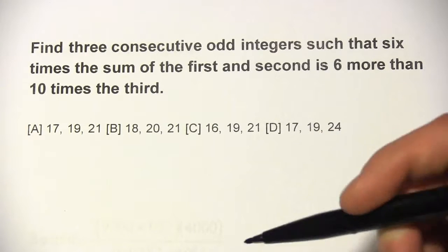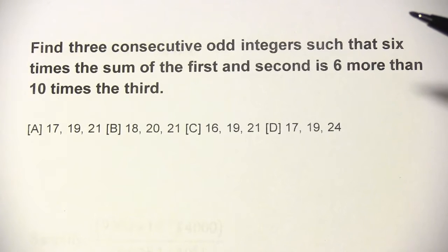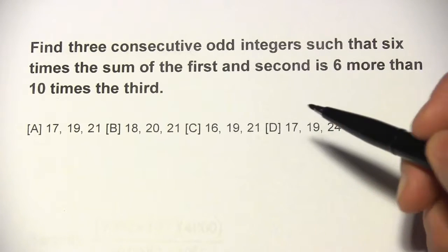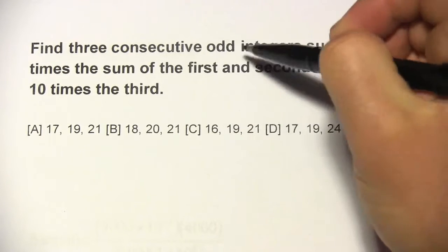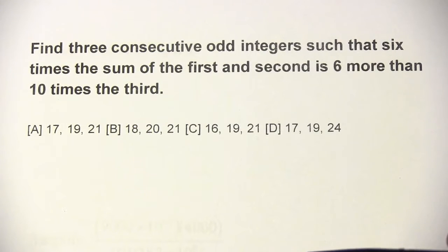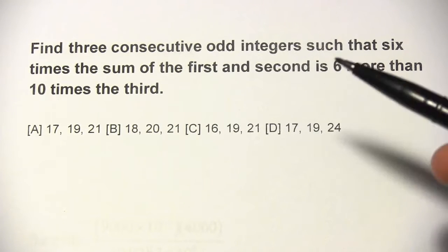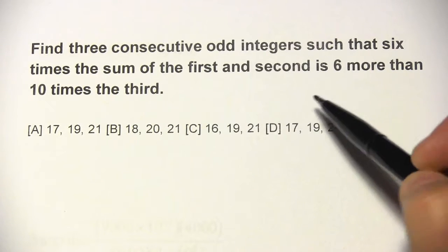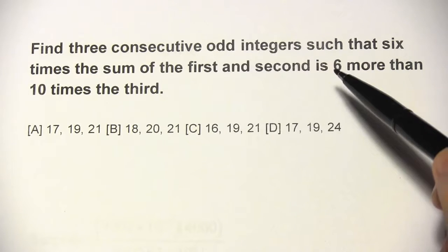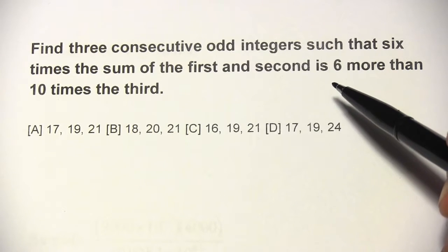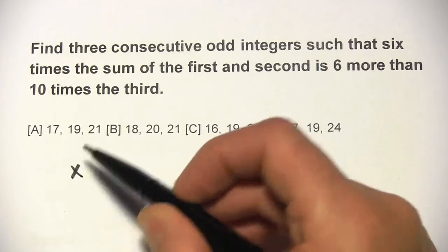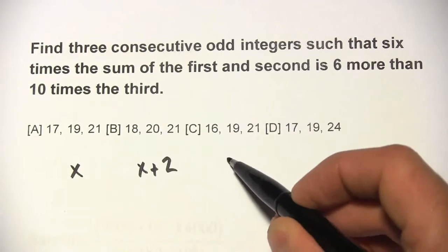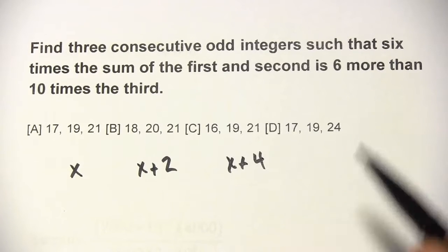Here we have some problems with consecutive odd or consecutive even integers. If you've done problems with consecutive integers before, you know we usually choose x, x plus 1, x plus 2 as our placeholders. With consecutive odd or even integers, it's a lot like that except instead of being just one apart, they're two apart. So we can think of our first integer as x, our second as x plus 2, our third as x plus 4, and so on.